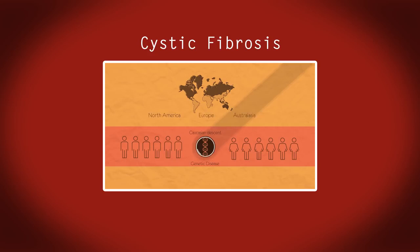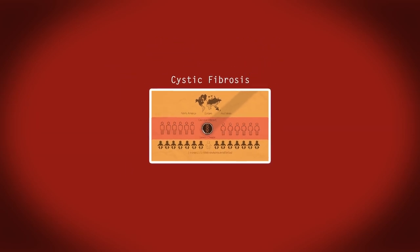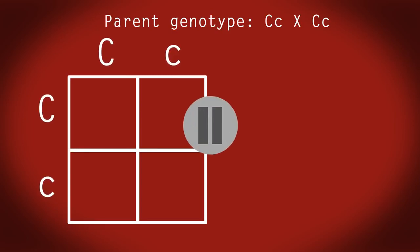Let's have a look at the probability of offspring being cystic fibrosis sufferers when two carrier parents with the Cc genotype mate. Can you complete the Punnett square? Pause the video, work it out and click play when you're ready. Did you get it right?